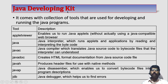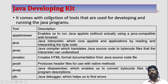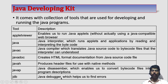Java Development Kit means, as I told, it is a collection of tools that are used for developing and running Java programs. Now, these are some of the Java tools and their purposes. The first one is called as Applet Viewer.